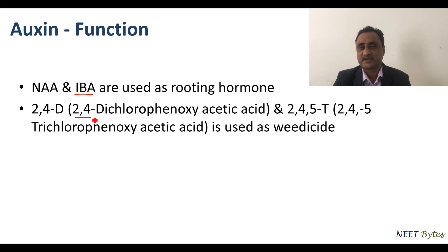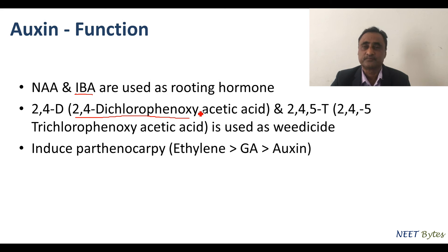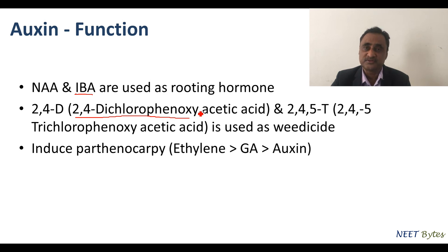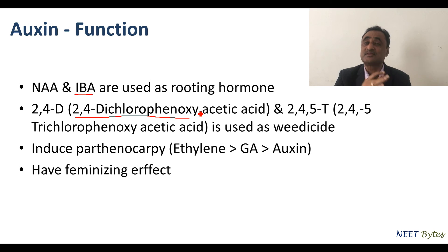Variants of auxin are used as rooting hormones — specifically naphthalene acetic acid (NAA) and indole butyric acid (IBA). Some variants are also used as herbicides, such as 2,4-D (2,4-dichlorophenoxyacetic acid) and 2,4,5-T. Auxins also induce parthenocarpy, though three hormones are known for this: ethylene, gibberellin, and auxin. In terms of potency, ethylene is highest, followed by gibberellin, then auxin.